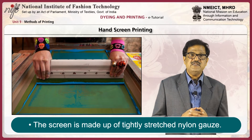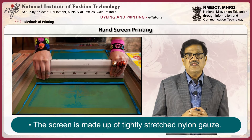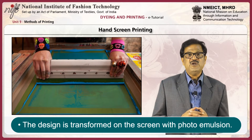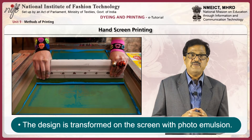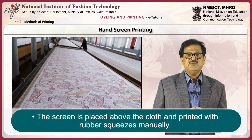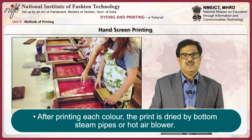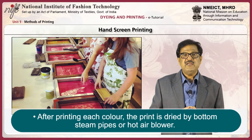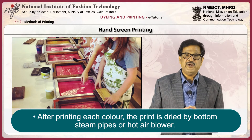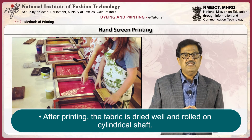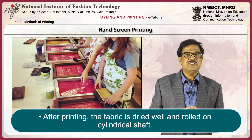Hand screen printing: The screen is made up of tightly stretched nylon gauze. The design is transferred onto the screen with photo emulsion. The screen is placed above the cloth and printed with rubber squeegees manually. After printing each color, the print is dried by bottom steam pipes or hot air blower. After printing, the fabric is dried well and rolled on a cylindrical shaft.